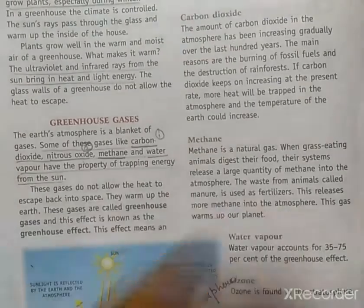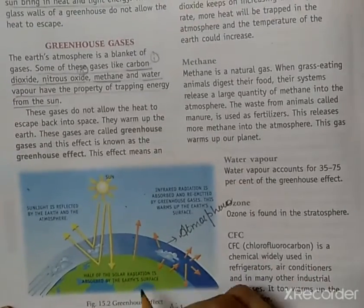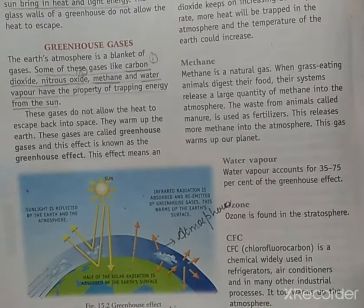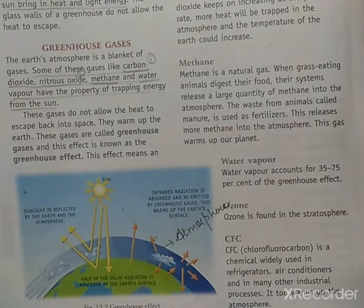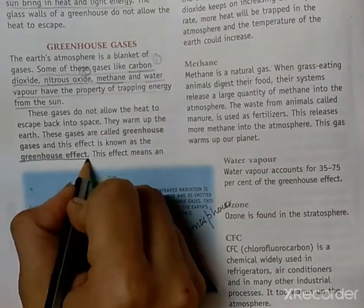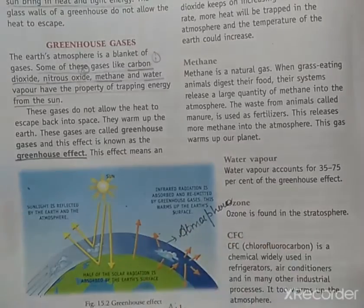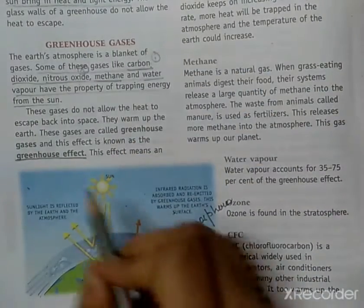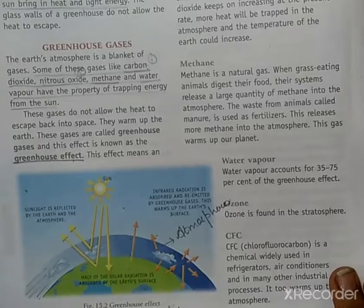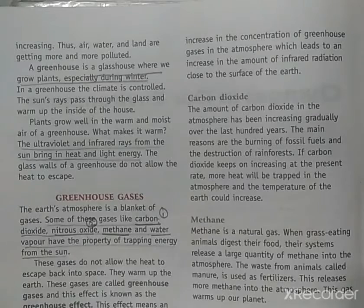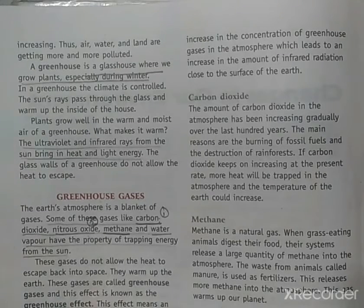When these gases do not allow the heat to escape, they warm up the earth — the temperature of the earth rises. This effect is known as the greenhouse effect. When the temperature rises due to greenhouse gases, this effect is known as the greenhouse effect. I hope you have understood this topic. That's it for today. Thank you and have a nice day ahead.